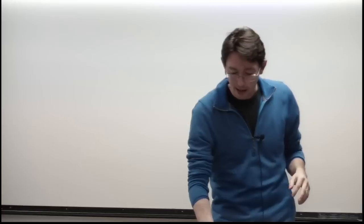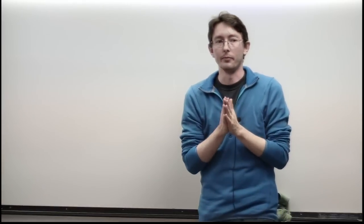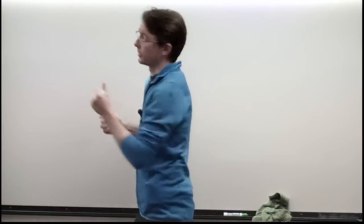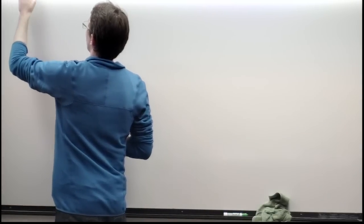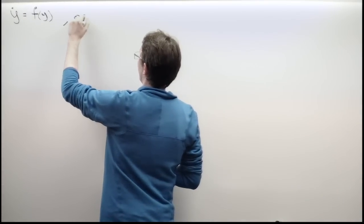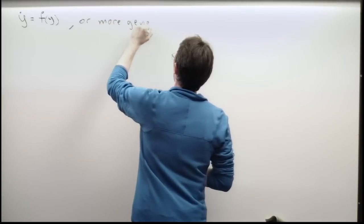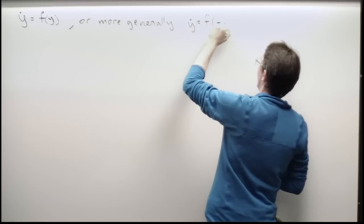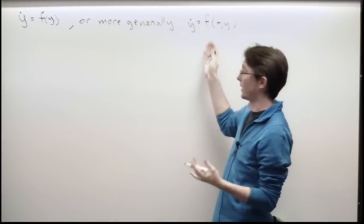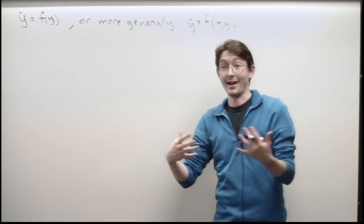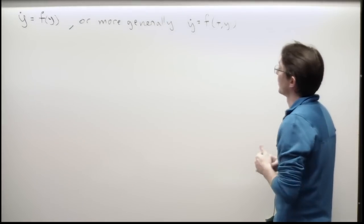Welcome back everybody. Last two lectures we introduced ordinary differential equations — systems of the form y-dot equals f of y. More generally, we could have y-dot equals a function of time and space. I think of y as kind of space and t as time, so my nonlinear function or vector field might actually be changing.